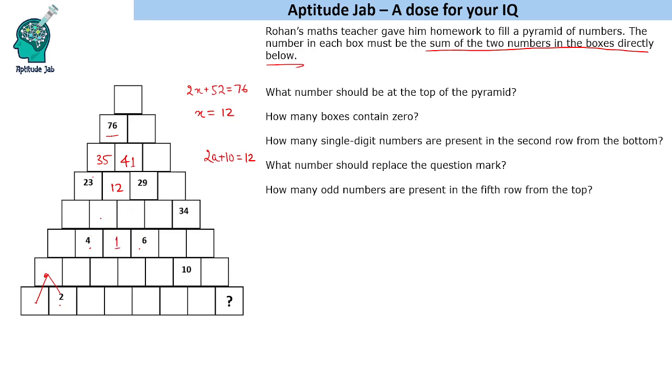So we got 1 here. So 1 plus 4 is 5, and 1 plus 6 is 7. Now using these numbers, we can quickly fill the remaining grid. So 23 minus 5, it should be 18. 7 and 29, so this will be 22. 22 and 34 will give us 56.